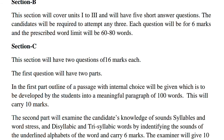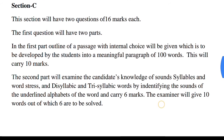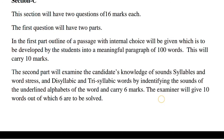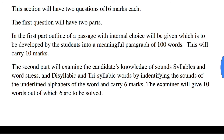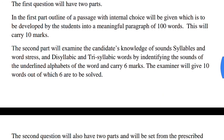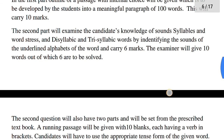Section C will have two questions of 16 marks each. The first question will have two parts. In the first part, an outline of a passage with internal choice will be given, which is to be developed by the students into a meaningful paragraph of 100 words, carrying 10 marks. The second part will examine the candidate's knowledge of sound, syllables and word stress, and disyllabic and trisyllabic words by identifying the sounds of the underlying alphabets of the words, carrying six marks. The examiner will give 10 marks out of which six are to be solved.